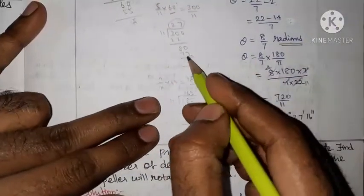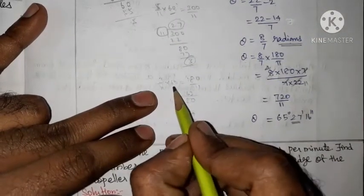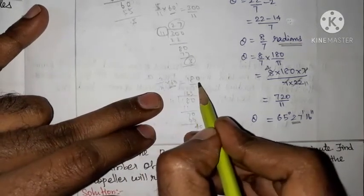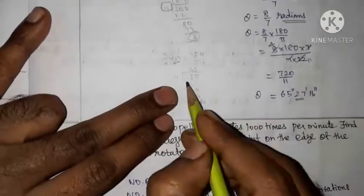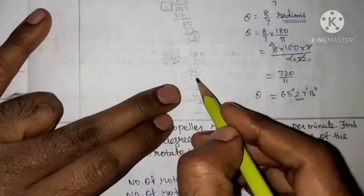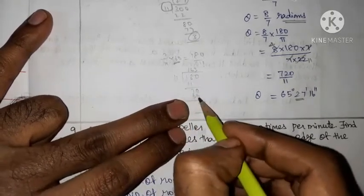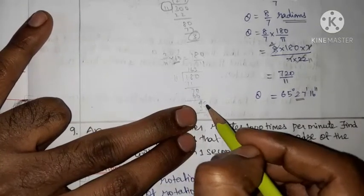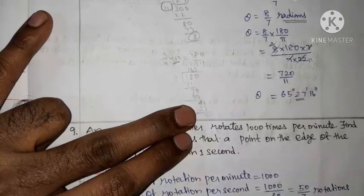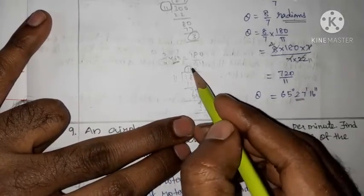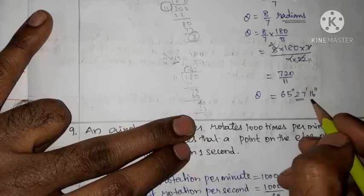Now for the seconds. Take the remaining fraction and multiply by 60 again. 3/11 × 60 = 180/11. Dividing: 11 goes into 180 — 1 time is 11, balance 8; next step gives 16 with remainder. So the seconds value is 16 seconds. Therefore theta equals 65 degrees, 27 minutes, 16 seconds.